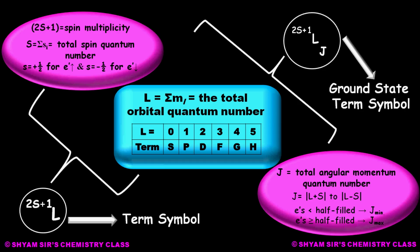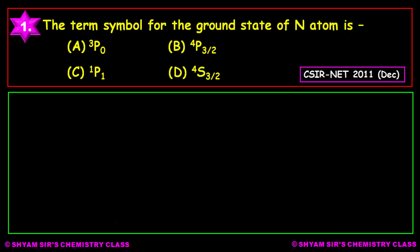Now let us learn shortcut tricks for the determination of this ground state term symbol. You can see this question was asked in CSIR 2011: 'Find the term symbol for the ground state of the nitrogen atom.' There are four options. You have to work very fast because in an exam you will not have much time to think. Let us see how we can do it using the shortcut method.